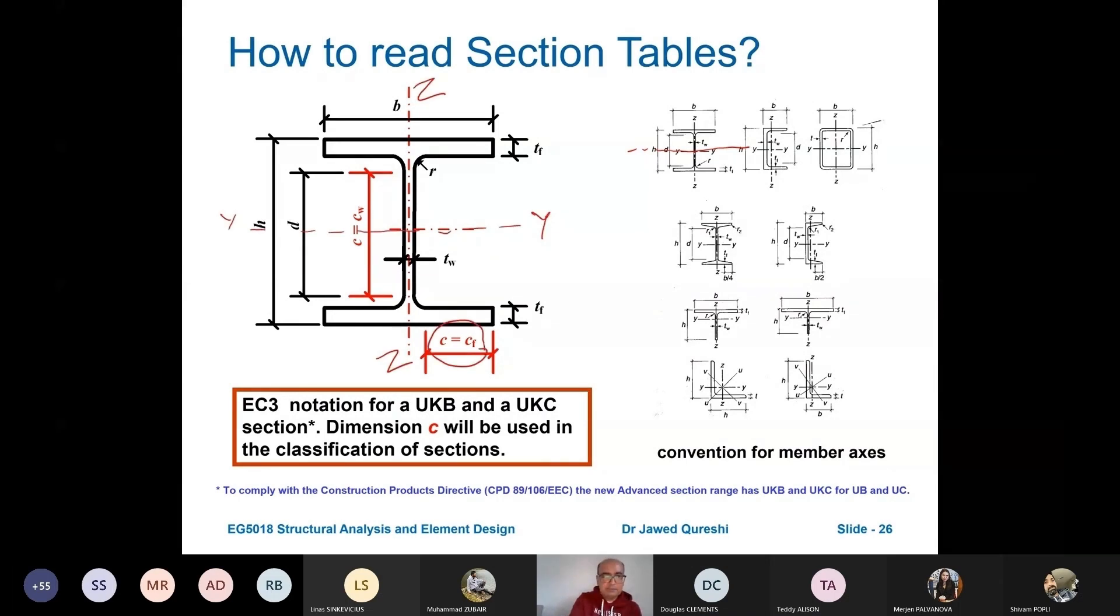These terms, C equal CF and C equal CW, we will use these terms in section classification. But for the time being, B is breadth of the section. H is the overall depth of the section. D is the depth of flat portion of web.